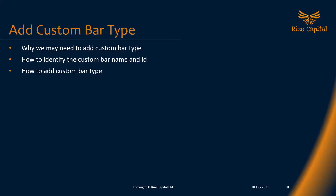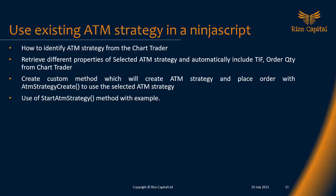In the next topic, we will talk about how to add a custom bar type. There will be many occasions when programming something complex where you want to use a custom bar type from maybe different vendors or one you have already created. We'll cover how to identify the custom name and ID, and how to add a custom bar type within your script. It's a bit complex, but we will do our best to make it simple.